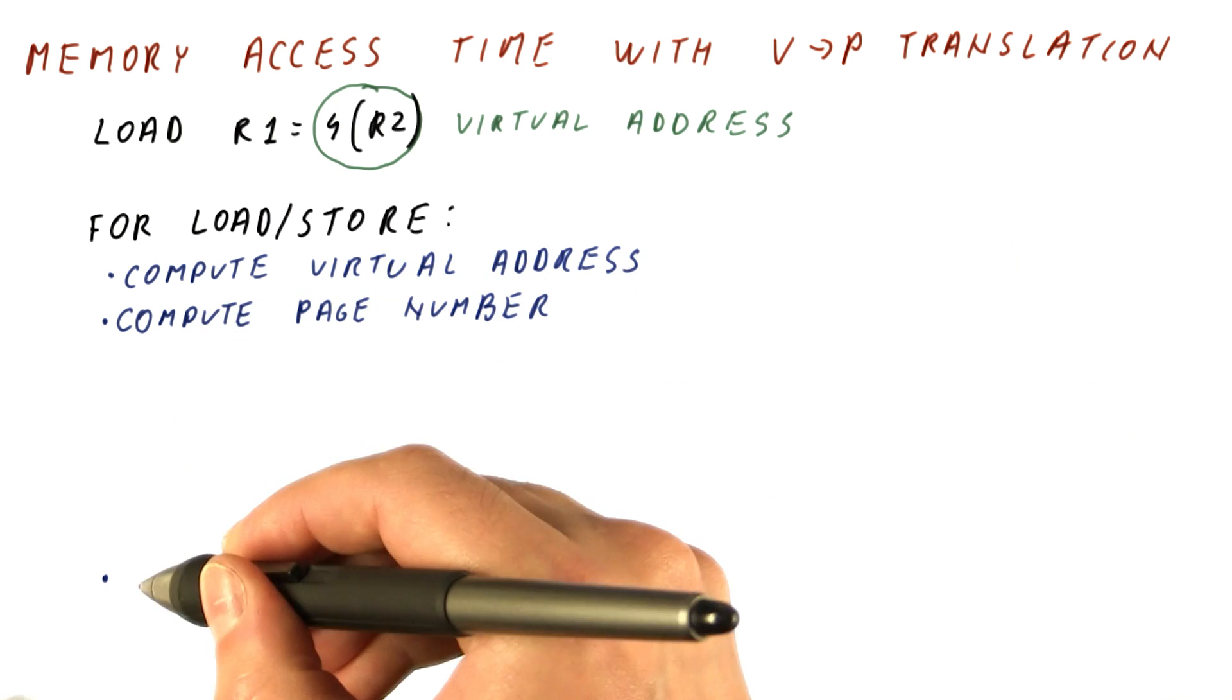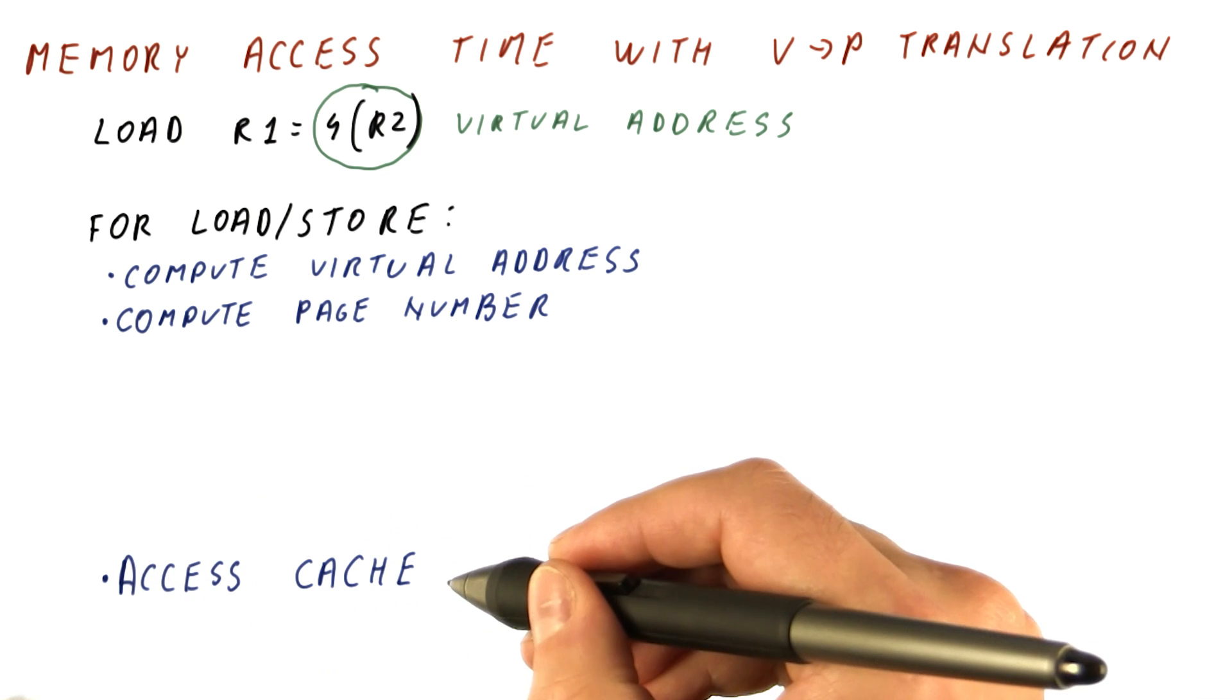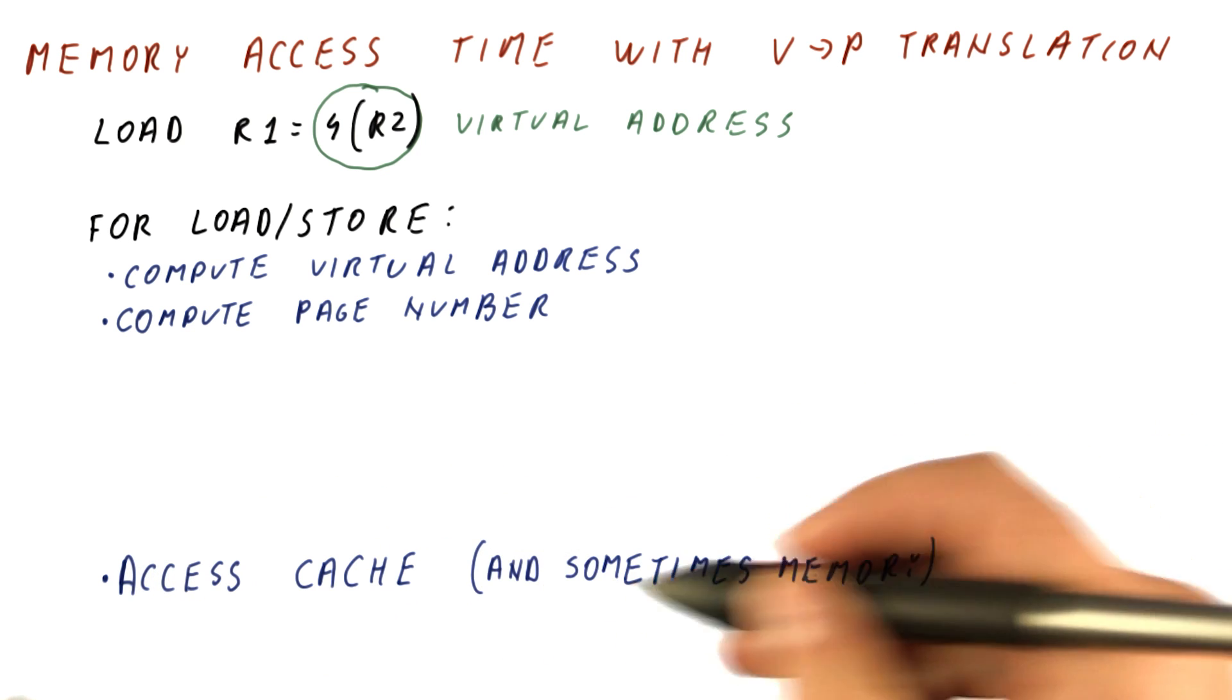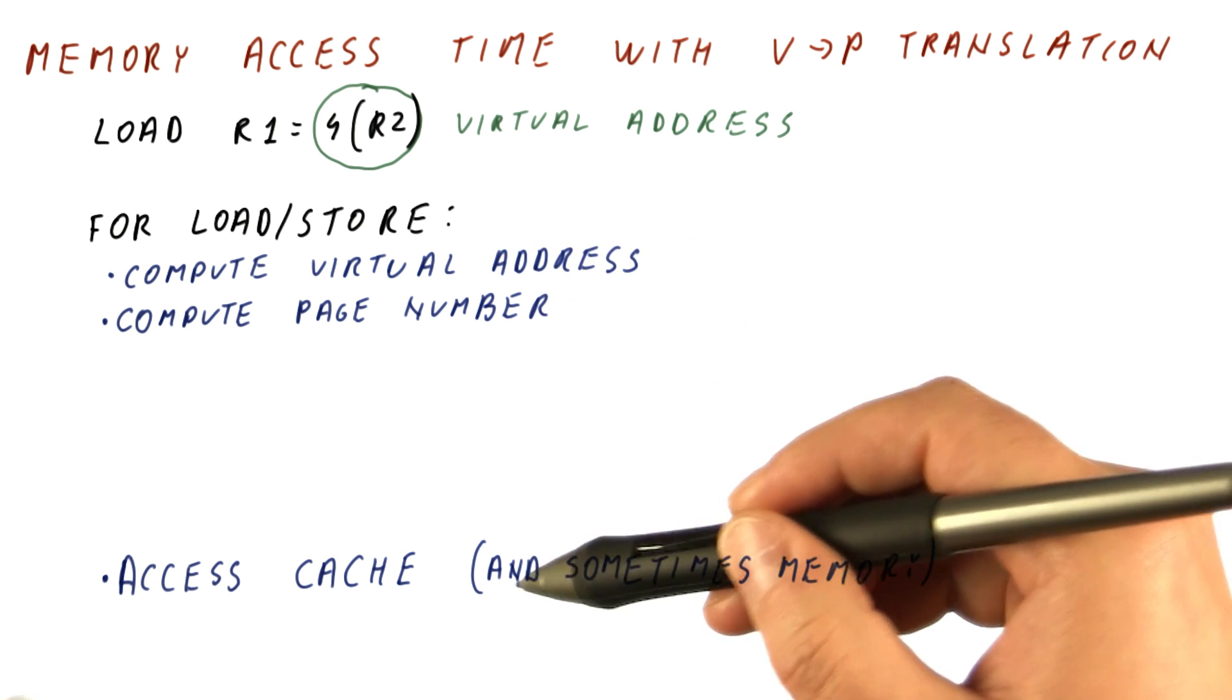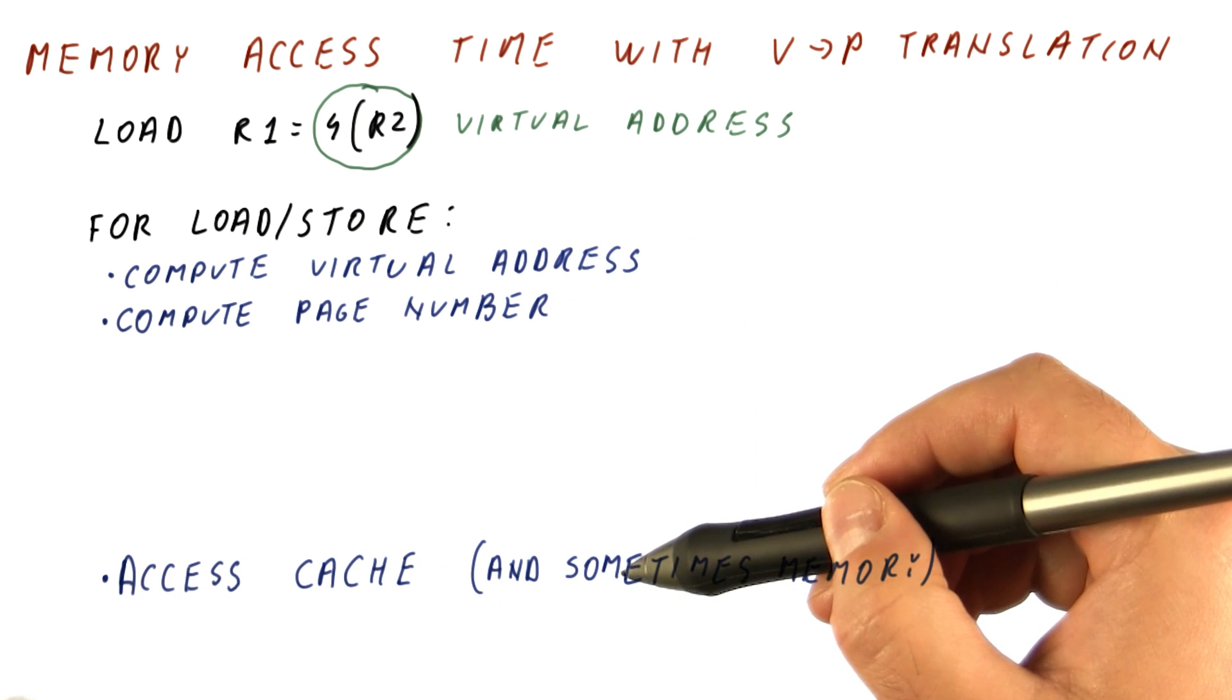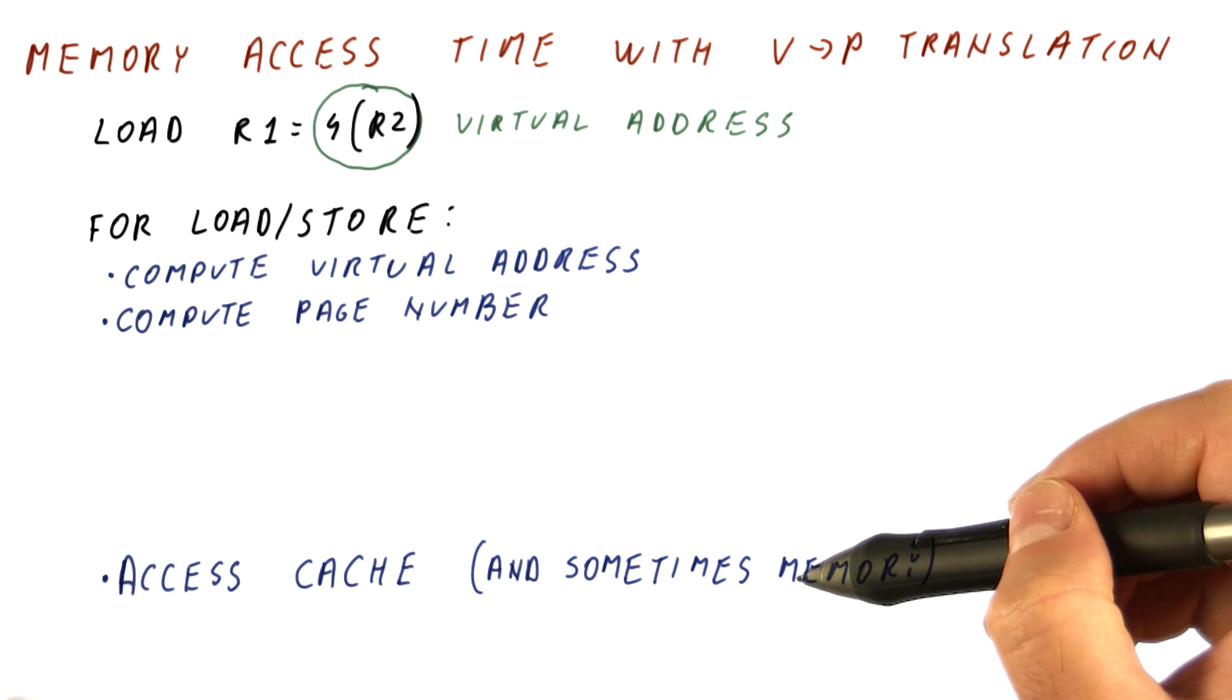And without any address translation, the next thing that the processor will do is access the cache. And sometimes, if there is a cache miss, the actual memory. So again, these two are extremely quick. Most of the time will be spent accessing the cache. And occasionally, we will spend more cycles because we need to access the memory.